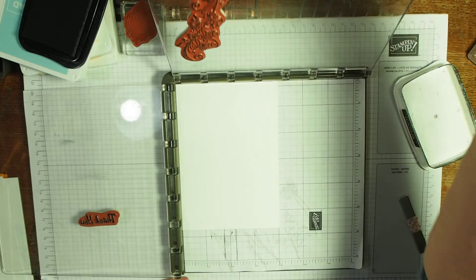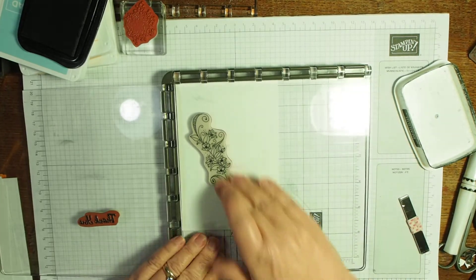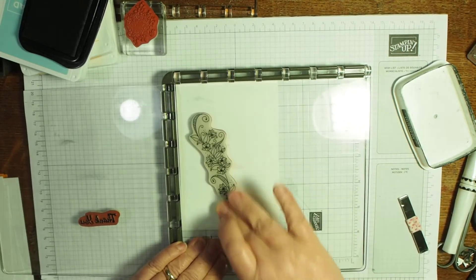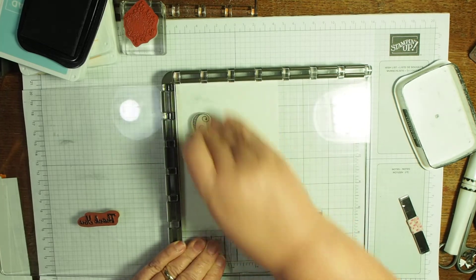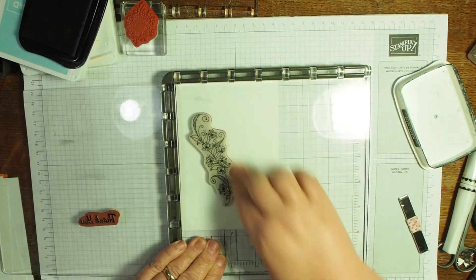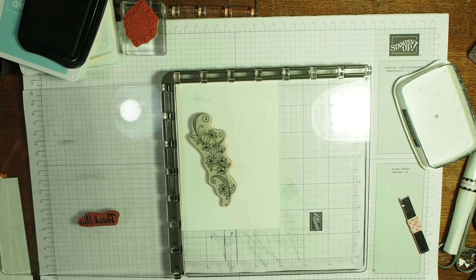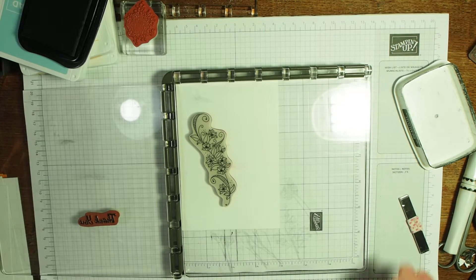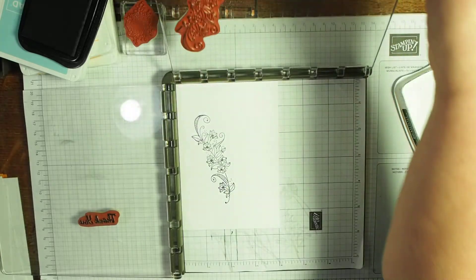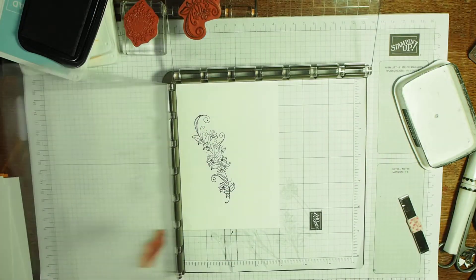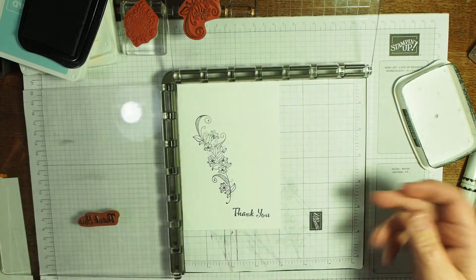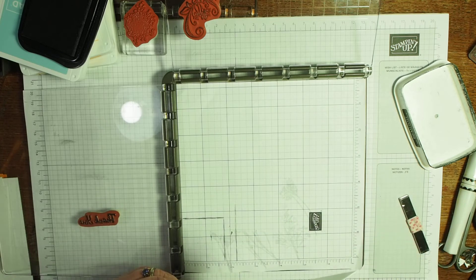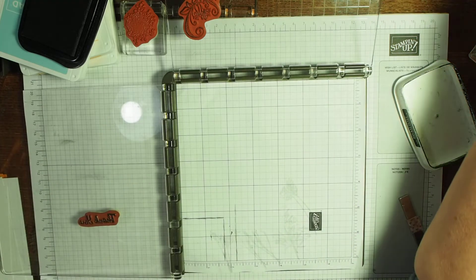I'm going to use Wink of Stella and not like an aqua painter or something—Memento would work perfectly well. However, if you were going to use actual watercoloring, then it would probably be better to use Stayz On. So there's the flowers and thank you, and a gray hair on it.